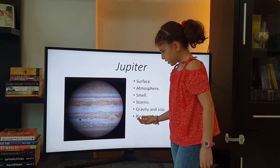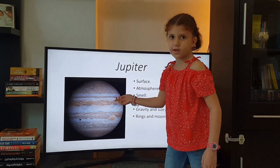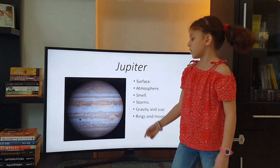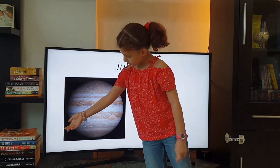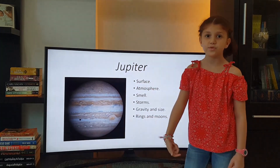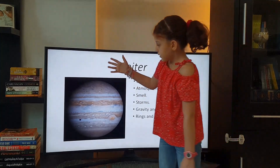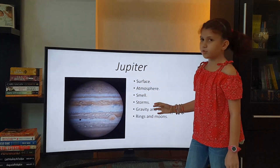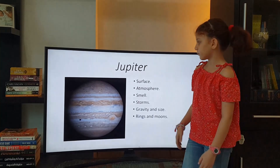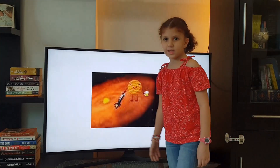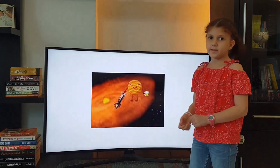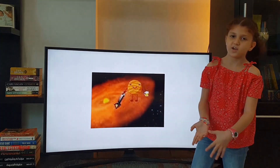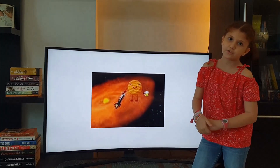Jupiter has very faint rings. It takes 20 Earths to span Jupiter's diameter. Jupiter has at least 70 moons, the biggest one being Ganymede — big enough to be called a planet if it orbited the Sun rather than Jupiter. Jupiter acts as a vacuum cleaner in the solar system, protecting Earth from asteroids, meteoroids, and comets by swallowing them if they get too close to Earth.